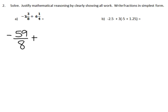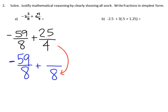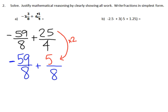Then we're going to change 6 and 1 fourth: 6 times 4 is 24, plus 1 is 25, and that's still going to be out of 4. Now I need to get common denominators — I'm looking for a number that 8 and 4 can both multiply into, and I can use 8 for that. So I'm going to rewrite both fractions out of 8. The first fraction is already out of 8, so I just copy it. For the second fraction, I multiply the denominator 4 by 2, and do the exact same thing to the numerator to get 50.